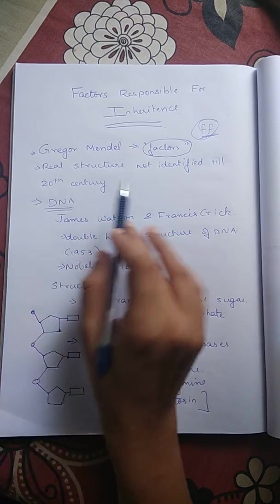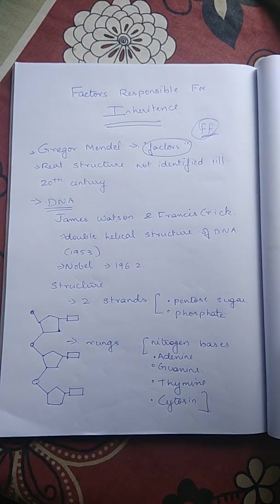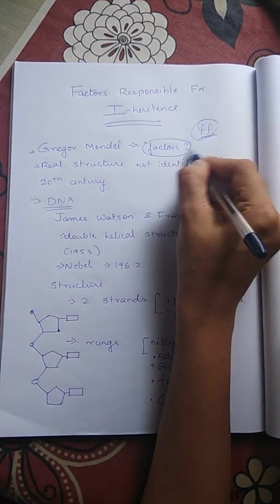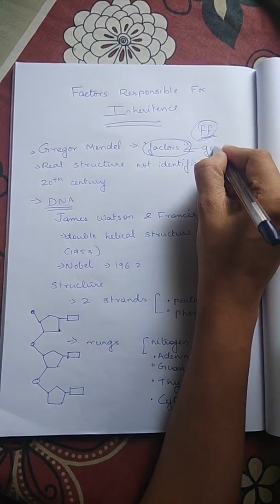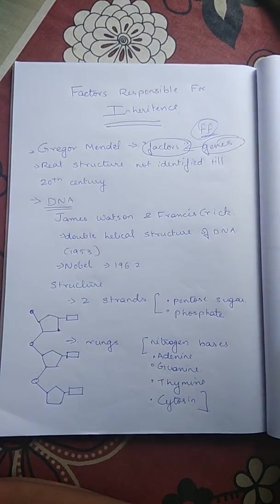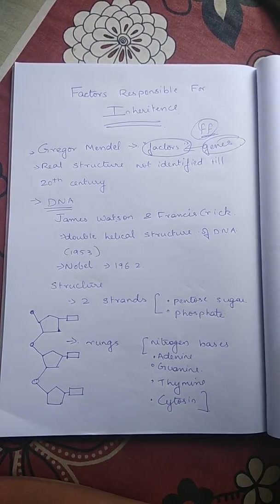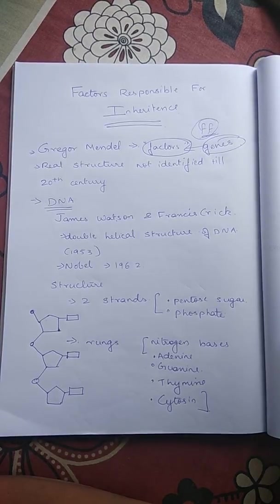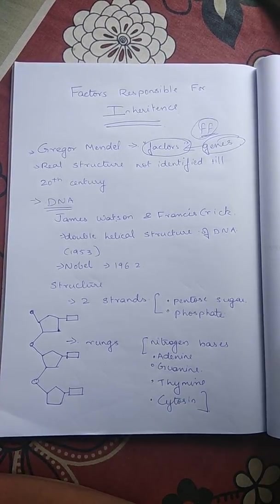In the 20th century, the real structure of a factor was identified. Genes are the factors which actually determine the characteristics of any organism. Skin color is determined by genes.